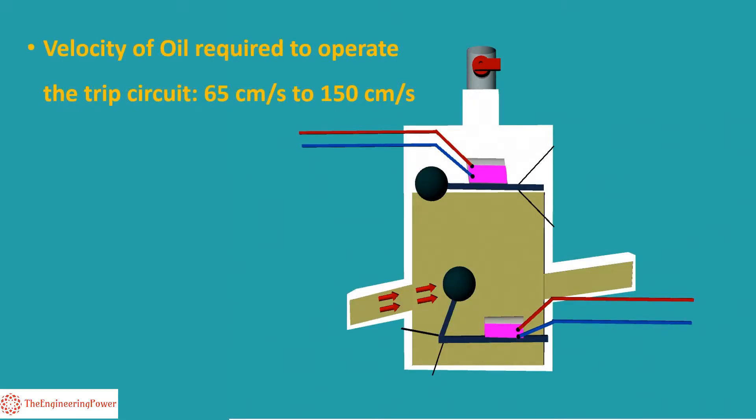The velocity of oil required to operate the trip circuit of relay varies from 65 cm per second to 150 cm per second depending upon the size of the relay and rating of the transformer.